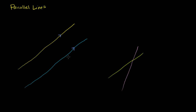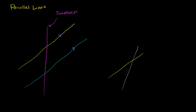What we want to think about is what happens when these parallel lines are intersected by a third line. This third line that intersects the parallel lines is called a transversal line, because it traverses the two parallel lines.